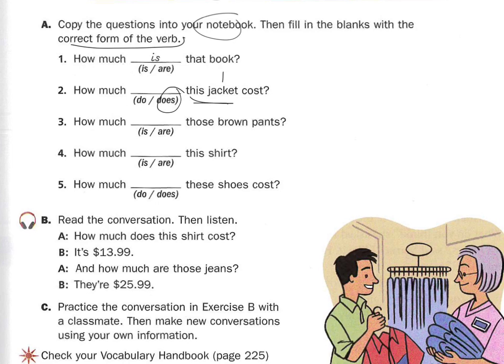How much are those brown pants? We call pants two even though it's really one thing because there's two legs to the pants. How much is this shirt? The shirt is one.